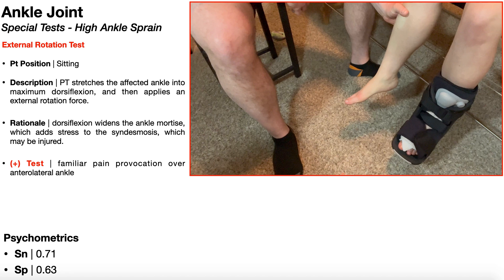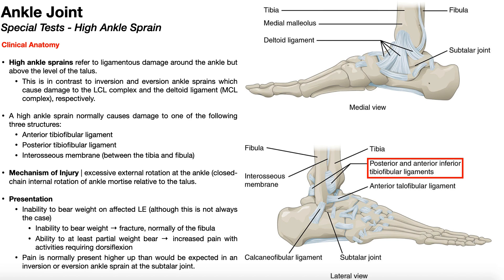In this video, we're going to be discussing two special tests used in the diagnosis of a high ankle sprain, but before we get into those, let's review some of the basic anatomy first. High ankle sprains refer to ligamentous damage around the ankle but above the level of the talus. Looking at this medial view of the ankle and foot, we can see the tibia, and behind it is the fibula.